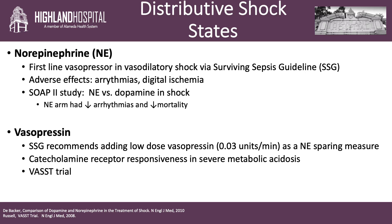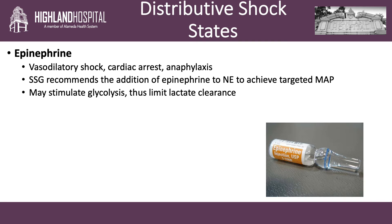Vasopressin: the Surviving Sepsis guidelines recommend adding low-dose vasopressin as a norepinephrine-sparing agent; however, the evidence behind this is weak and low quality. It may serve to restore catecholamine receptor responsiveness, particularly in patients that have severe metabolic acidosis. The VASST trial compared norepinephrine versus norepinephrine plus vasopressin in septic shock. The results showed that the addition of low-dose vasopressin to norepinephrine did not result in lower mortality. Clinically, epinephrine is used in vasodilatory shock, cardiac arrest, and anaphylaxis. The Surviving Sepsis guidelines recommend the addition of epinephrine to norepinephrine to achieve a targeted MAP; again, this is weak, low-quality evidence.